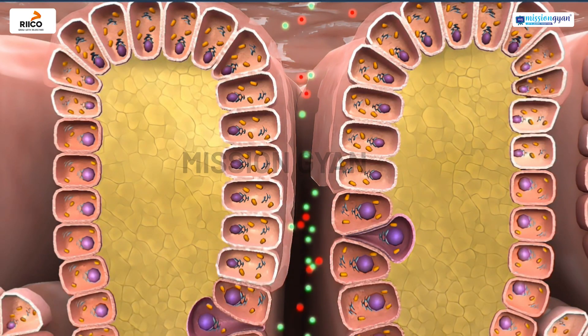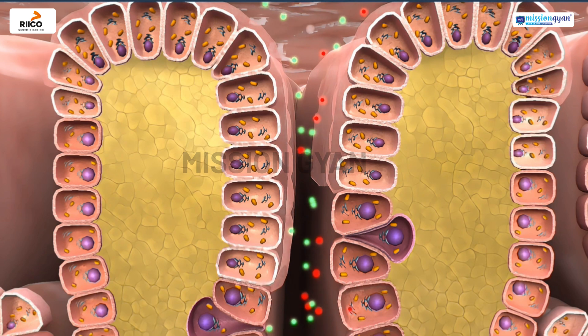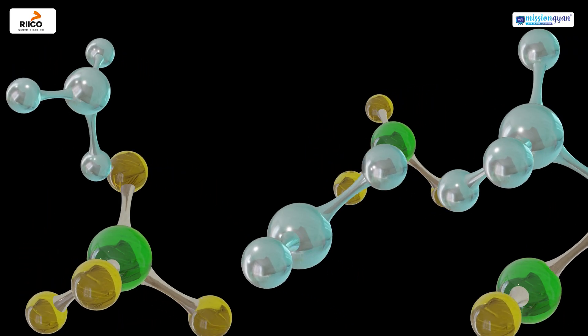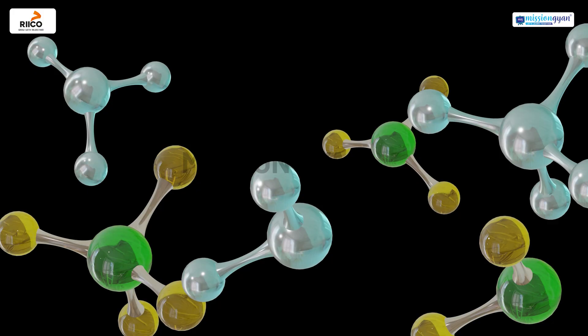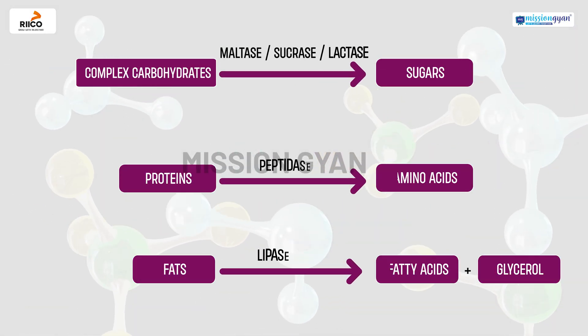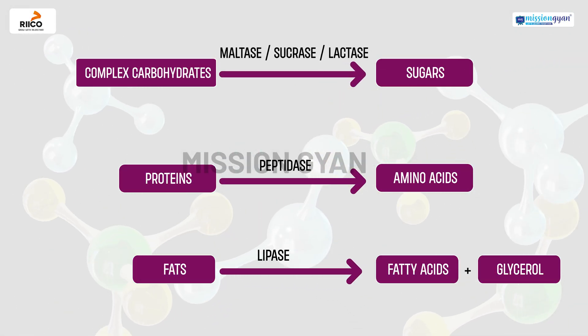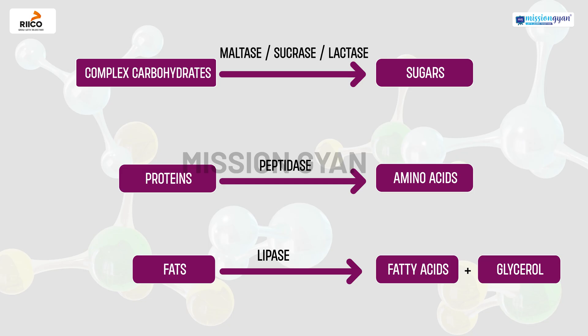In the small intestine, digestive juices are secreted by the glands present in the intestinal walls. These contain enzymes like maltase, sucrase, lactase, and peptidase.